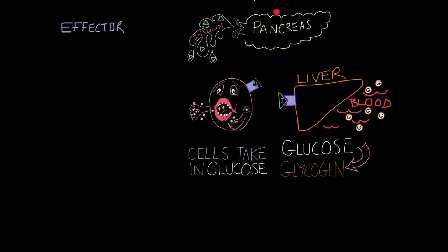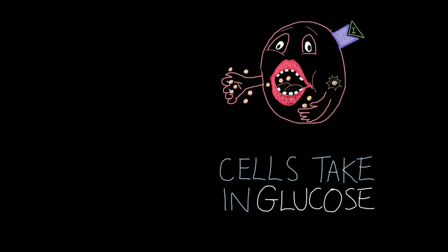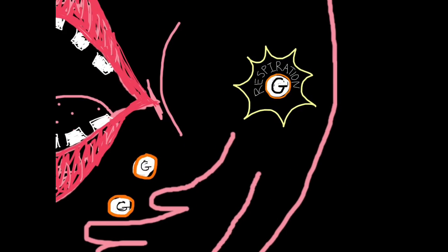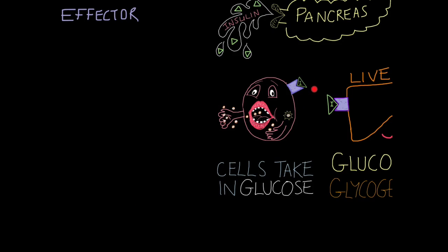The pancreas is the key effector here, and the pancreas will secrete a hormone called insulin, which you can see are these green triangles here. Now, insulin is a hormone, so it's a protein. Insulin has two effects. The first is it will bind to the protein receptors on cell membranes. So you can see here's the hormone insulin, here's the protein receptor, which is embedded on the cell membrane. That opens channels, allowing glucose to enter the cell where it can be used for the process of respiration.